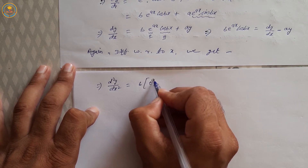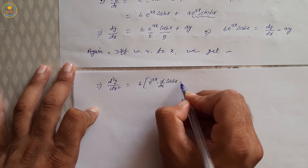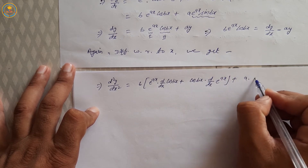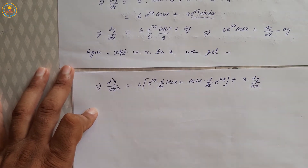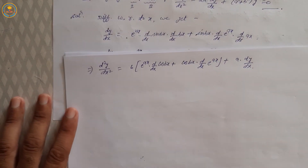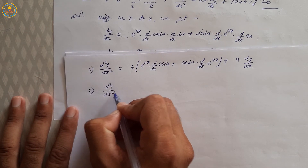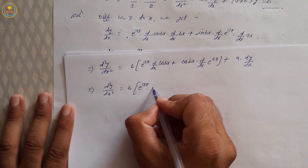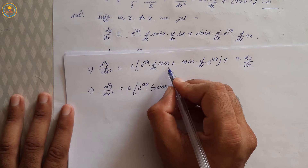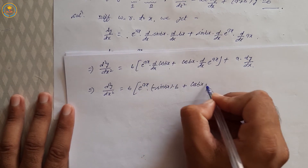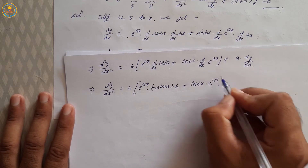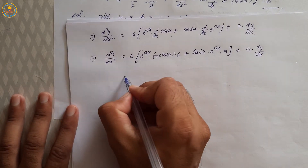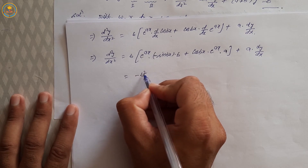Using the product rule on b · e^(ax) · cos(bx): b times first function e^(ax) same into dy/dx of cos(bx), plus cos(bx) same into dy/dx of e^(ax). Implies d²y/dx² = b · [e^(ax) · (−sin(bx)) · b + cos(bx) · a · e^(ax)] + a · dy/dx. Simplifying: = b · (−b · e^(ax) · sin(bx)) = −b² · e^(ax) · sin(bx).